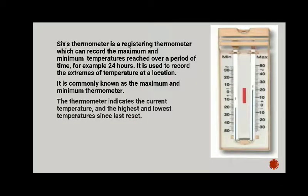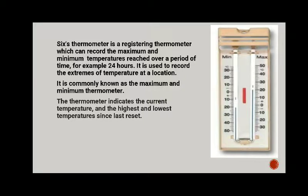Six's thermometer is a registering thermometer which can record the maximum and minimum temperature reached over a period of time — for example, twenty-five minutes or four hours. It is used to record the extremes of temperature at a location and is commonly known as the maximum and minimum thermometer. It indicates the current temperature and the highest and lowest temperature since last reset.